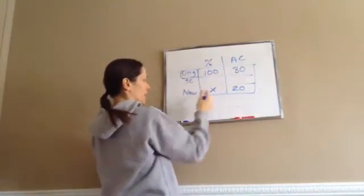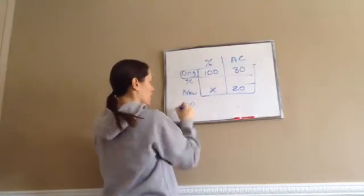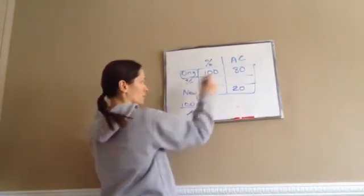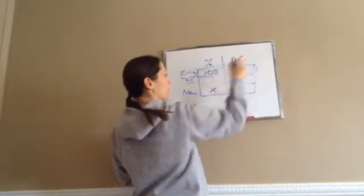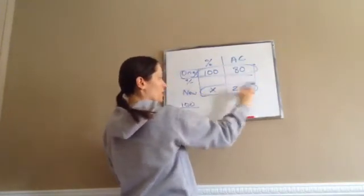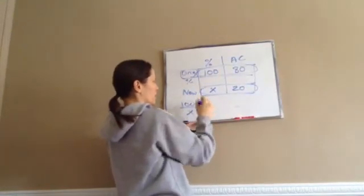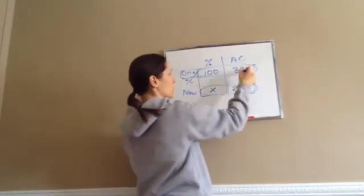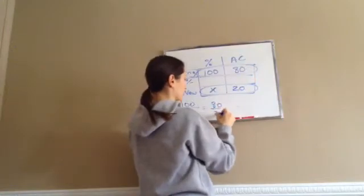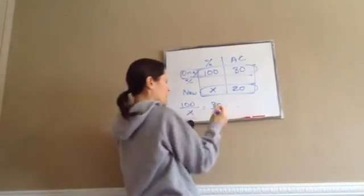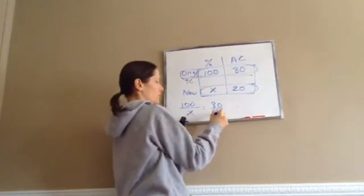You're going to take this side and go 100 over X. So you're going to take one that you know everything about and the one that you want to know about. The row that you want to know. And you're going to put them over each other. 100 over X equals. And then you're going to say 80 over 20. Hopefully you remember making these problems. So now you're just going to go 100 times 20. It's going to be 2,000.